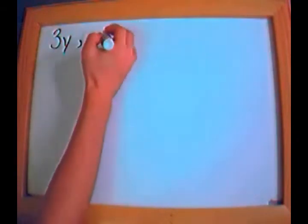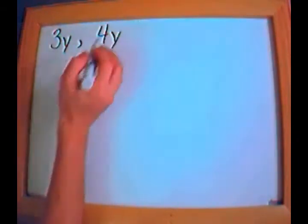What if I have something like 3y and 4y? The first thing I want to figure out is: are these what we call like terms? What do I mean by a term? We have 3y, which is 3 times y, and 4y, which is 4 times y. When I say like terms, I mean all of the variables that come after the number — the coefficient — are they the same with the same exponents? The numbers in the front can be different, but the variables have to be the same in order to be like terms.